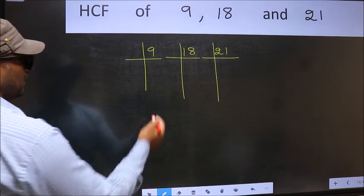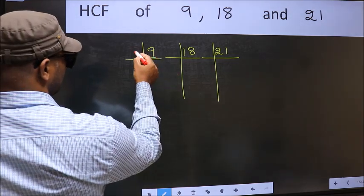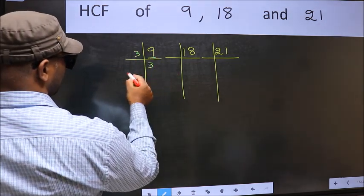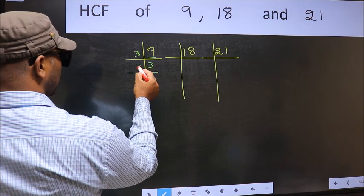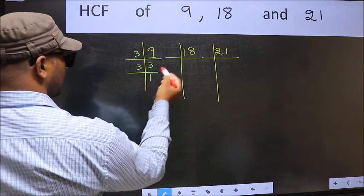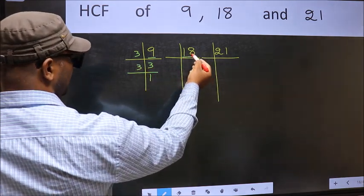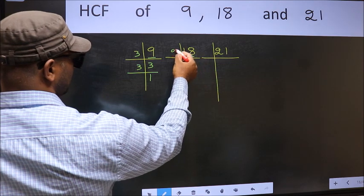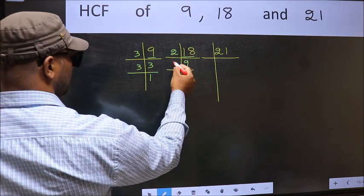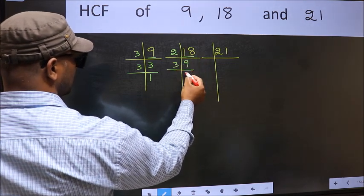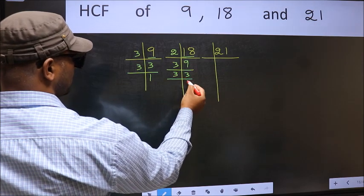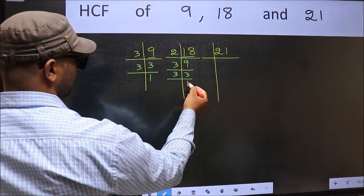Here we have 9. 9 is 3 times 3, which is 9. Now 3 is a prime number, so 3 times 1 is 3. Now the other number, 18. 18 is 2 times 9, which is 18. 9 is 3 times 3. Now 3 is a prime number, so 3 times 1 is 3.